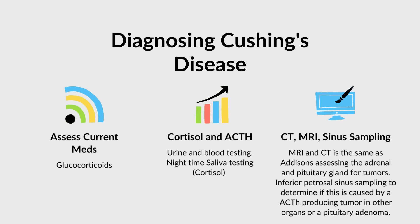For Cushing's recap: since we have too much cortisol, first make sure the patient is not on an oral glucocorticoid that may be causing this, and address that if so. Still look at cortisol and ACTH levels — 24-hour urine to assess cortisol, blood testing for cortisol and ACTH. Cortisol levels increase and decrease throughout the day, so it's best to assess nighttime saliva testing for cortisol in Cushing's patients. Then CT and MRI to assess for tumors, and inferior petrosal sinus sampling to determine if it's an ACTH-producing tumor from a different organ or a pituitary adenoma.